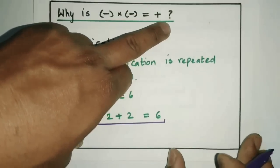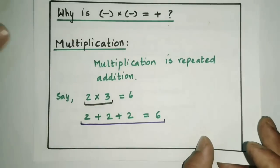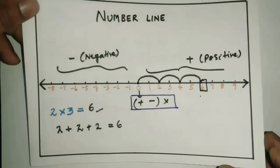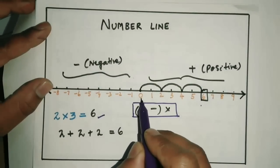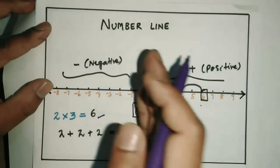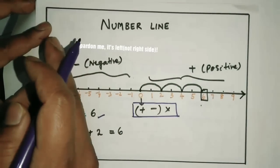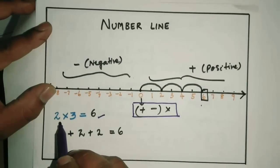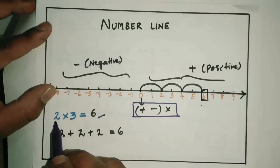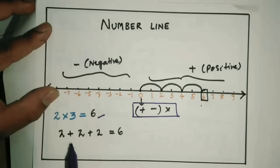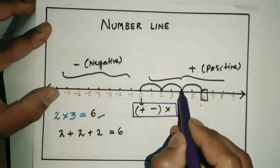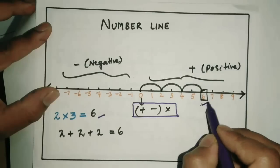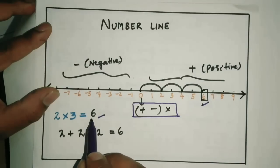Now let us also use the concept of the number line. A number line is a simple representation of integers — it starts with 0 in the middle, all numbers towards the right are positive and towards the left are negative. For instance, to calculate 2 into 3 on a number line, I start at 0 and take 2 once, twice, and thrice — I end up at 6. Therefore 2 into 3 is 6.